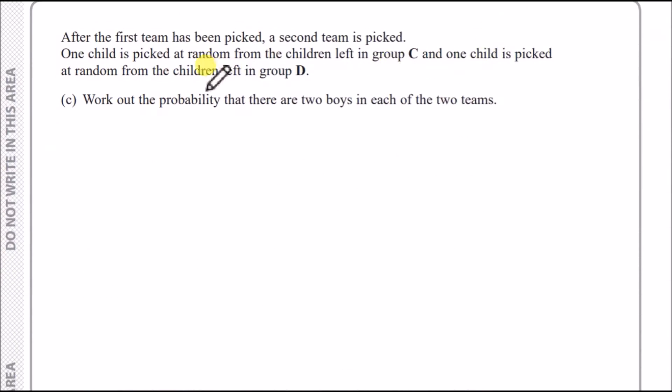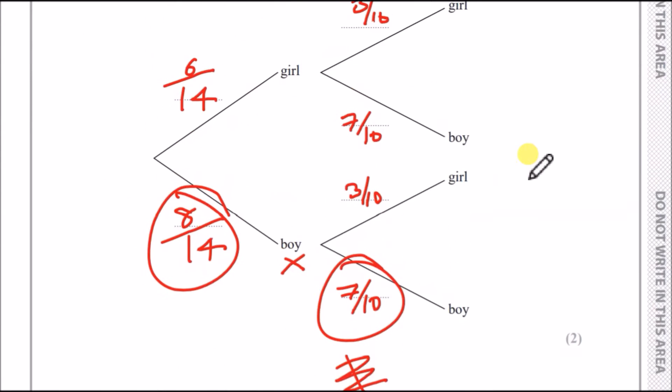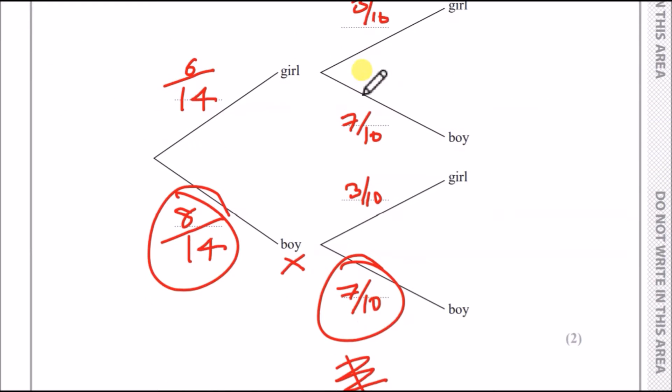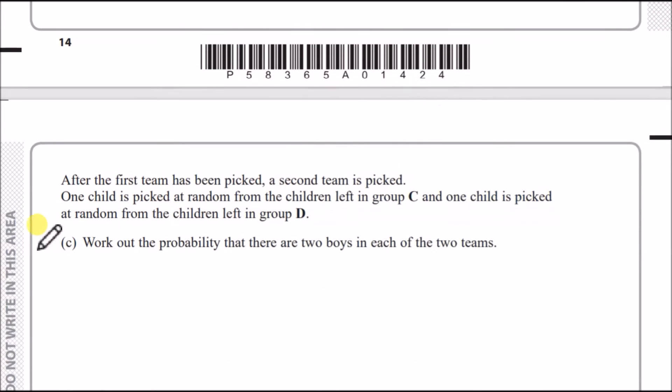For the next part, it says after the first team has been picked, a second team is picked. I'm trying to understand it myself. One child is picked at random from the children left in group C. So from my understanding, you pick a child. You initially had 14 students and 10 students. That's team one. So when you pick a student, you now end up with 13 students here and 9 students left. And that goes to team two.